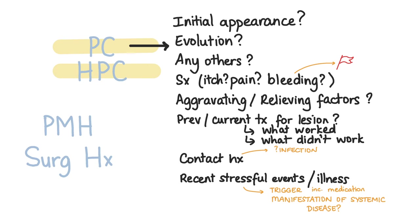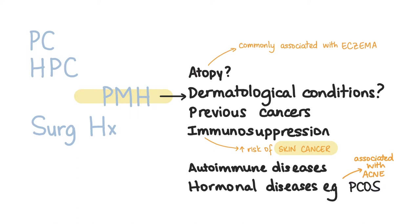When asking about the presenting complaint and history of the presenting complaint, ask about the initial appearance and the evolution of the lesion, if there are any other similar lesions or if there have been in the past. Ask about symptoms, particularly itch and pain, aggravating and relieving factors, previous and current treatments and whether or not they were effective, recent contact with anyone with similar symptoms, recent stressful events or illness. Also ask about history of sunburn, skin type and the use of tanning machines.